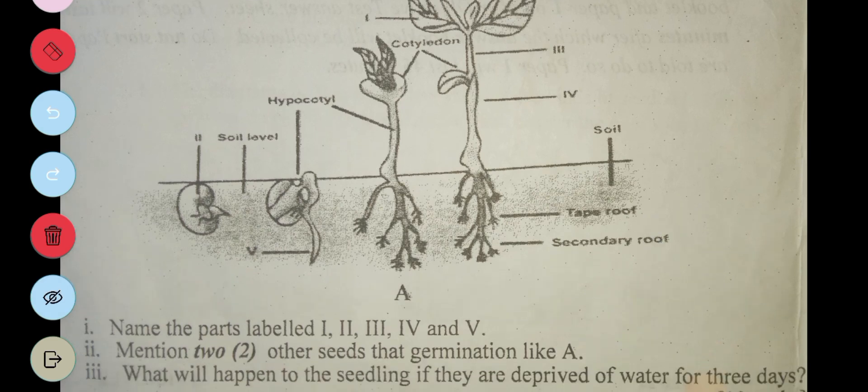The next question says: mention two other seeds that germinate like A. So two other seeds that germinate like A, we can have the tomato seed and then the mango seed.